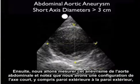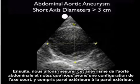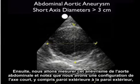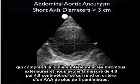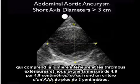Next, we're going to measure this abdominal aortic aneurysm. Notice we have a short axis configuration including outer wall to outer wall that includes the inner lumen and the outer thrombus, and we have a measurement of 4.8 by 4.9 centimeters, making the criteria of a triple A greater than 3 centimeters.